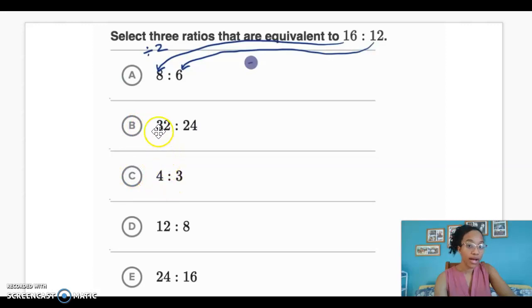4 times what gives me 32? Now here's where you really need to know your times tables. If you're not sure, we can do 4, 8, 12, 16, 20, 24, 28, 32. So 4 times 8 gives me 32. Does 3 times 8 give me 24? If yes, then that's another equivalent ratio. If not, we need to move on and keep checking.